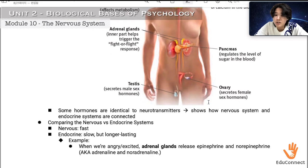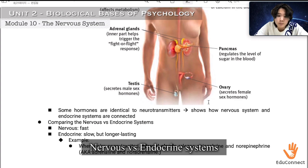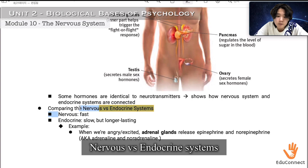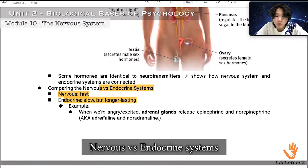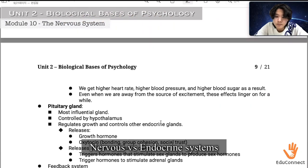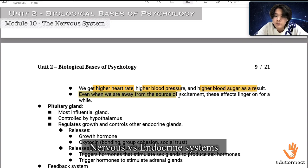Some hormones are identical to neurotransmitters, showing how the nervous and endocrine systems are connected. Comparing the two: the nervous system is fast, while the endocrine system is slow but longer lasting. For example, when we're angry or excited, the adrenal glands release epinephrine and norepinephrine — also known as adrenaline and noradrenaline — leading to higher heart rate, higher blood pressure, and higher blood sugar. Even when we are away from the source of excitement, these effects linger on for a while.